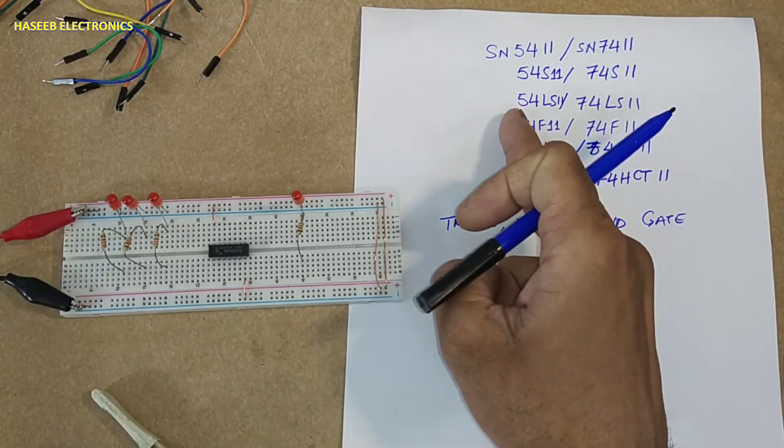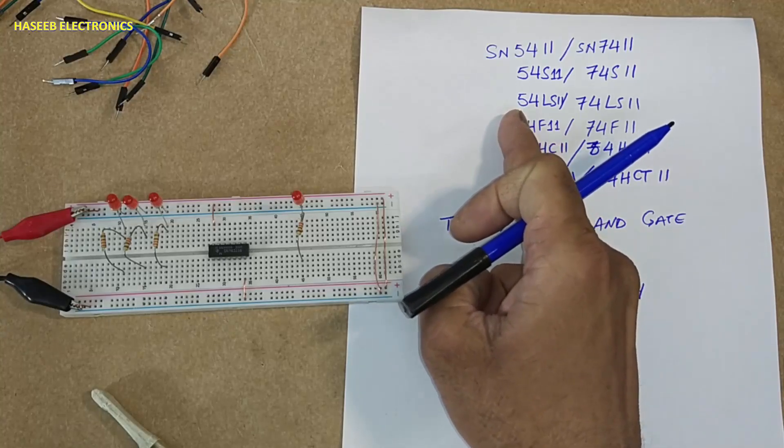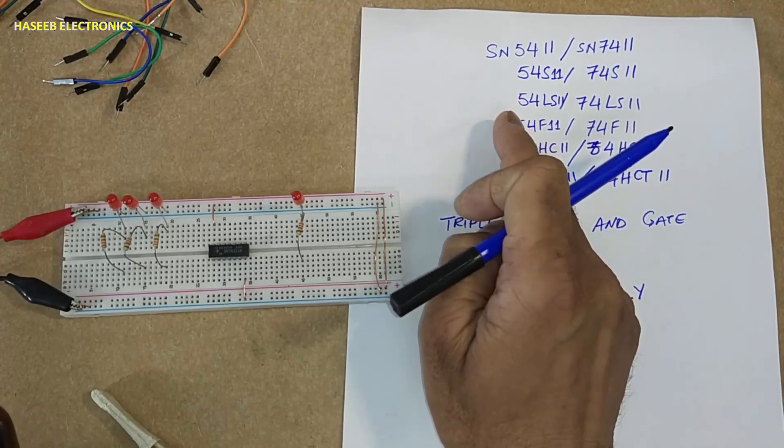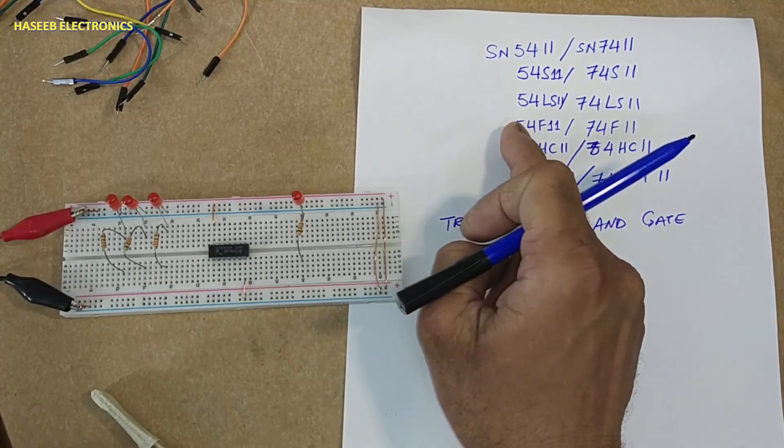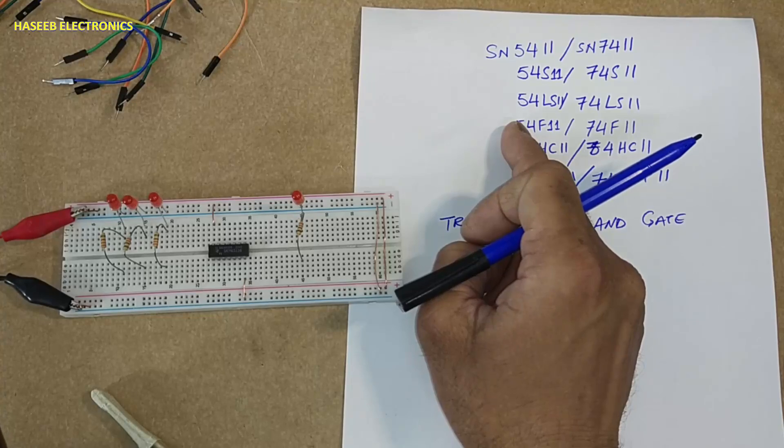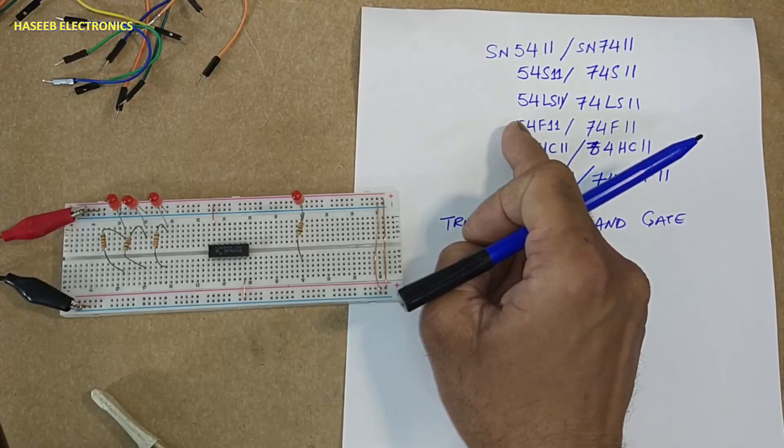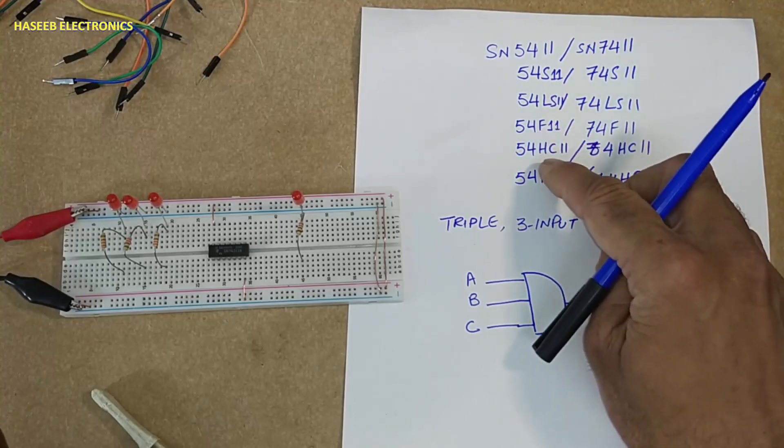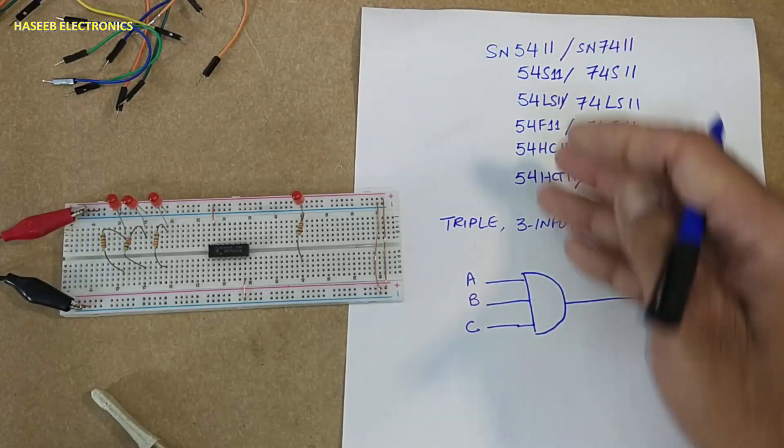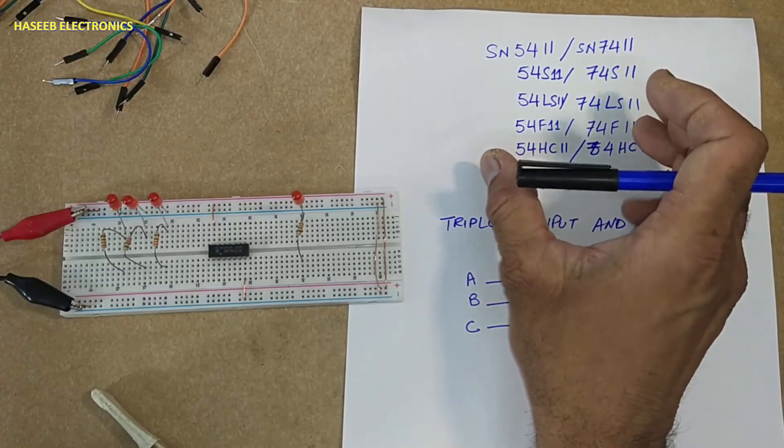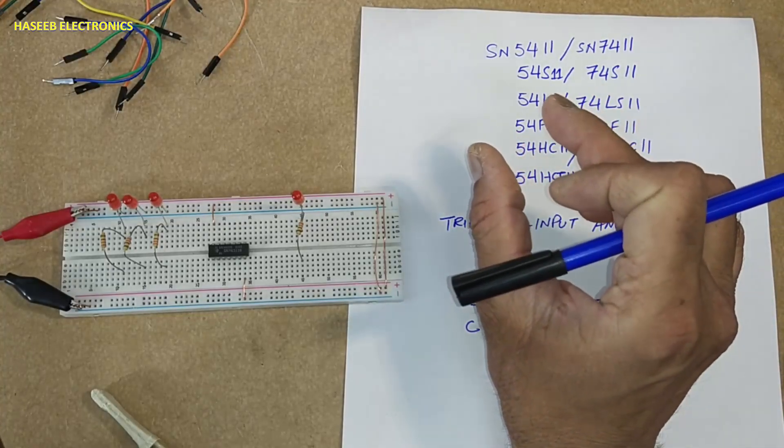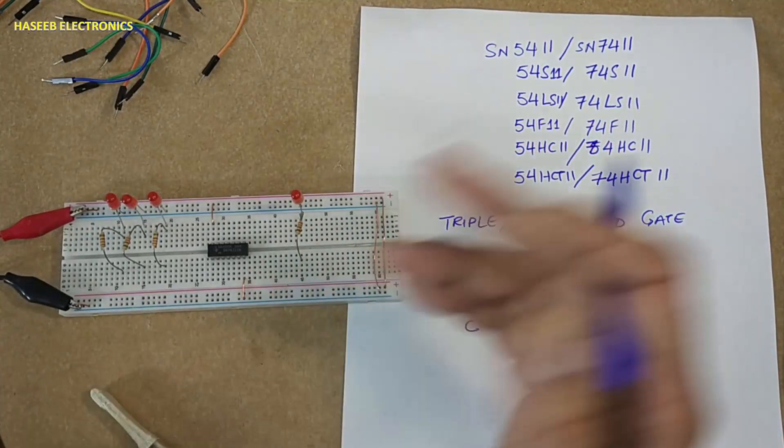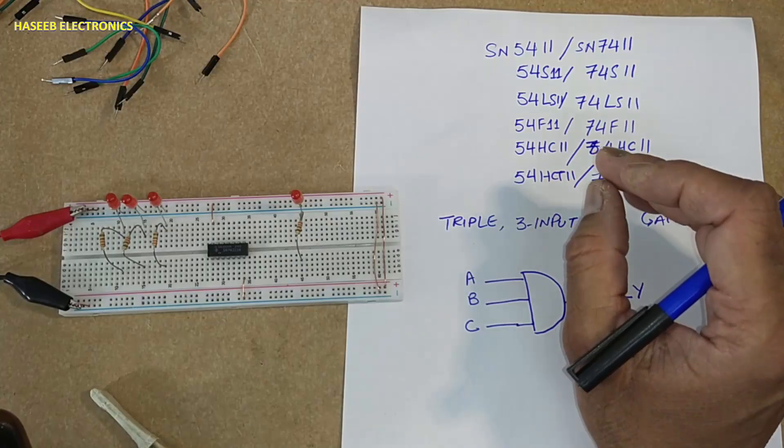54 is military and industrial standard for cold weather, minus 55 up to 125 degree centigrade free air temperature. Simple S, LS, F, HC, HCT and other families, there are some parameter differences like switching speed and delay time, but the working principle is the same.